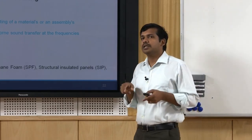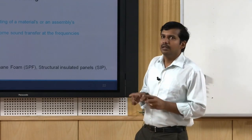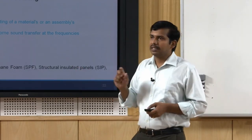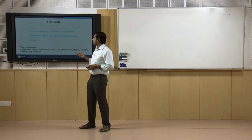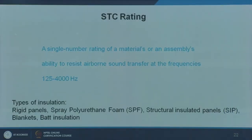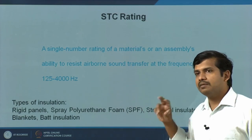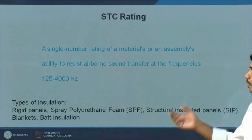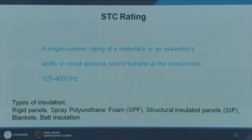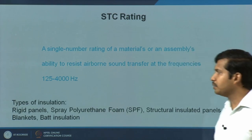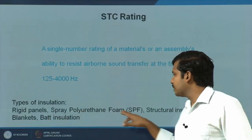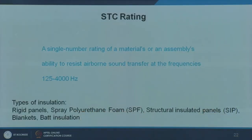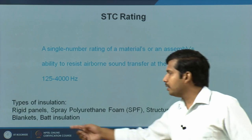STC is a single number rating of a particular material or assembly's ability to resist airborne sound transfer, determined at frequencies between 125 to 4000 Hz. There are different types of insulation — rigid panels, spray polyurethane foam (SPFR), structural insulated panels (SIP), blankets, and batt insulation. We refer to the concept of transmission loss: without the material, there is a certain amount of sound transmission between rooms; after insulation, a transmission loss occurs, which determines the efficiency of the material.